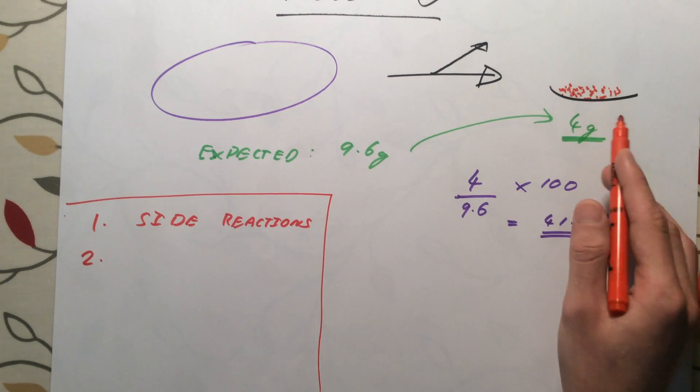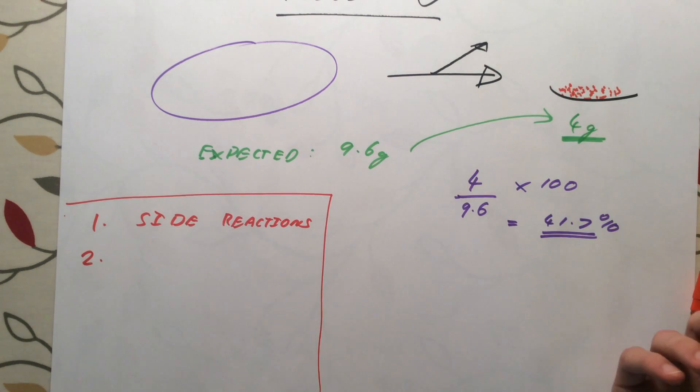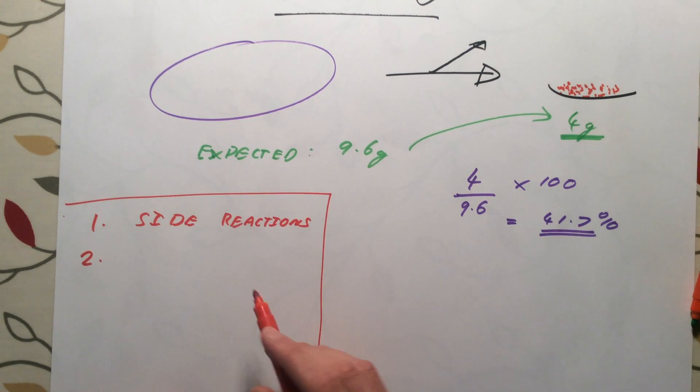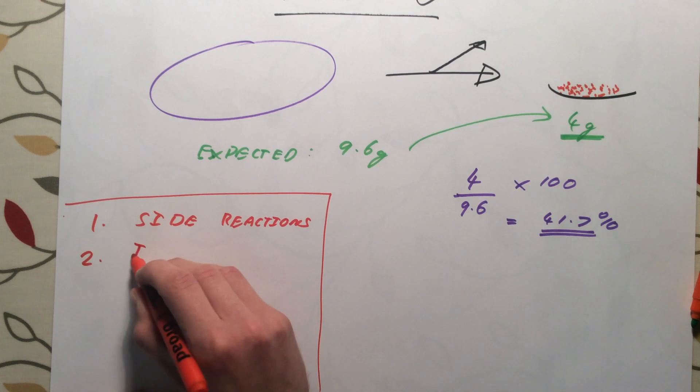If we were to stop that reaction early and measure and purify and record the amount of product we formed, the reaction wouldn't have been complete. Not all of the iron would have rusted, so a second reason we might not get a 100% yield is because the reaction might be incomplete.